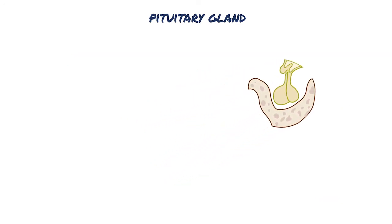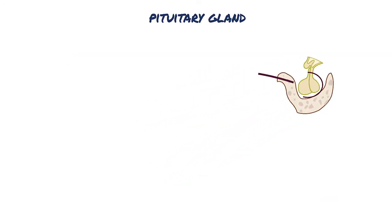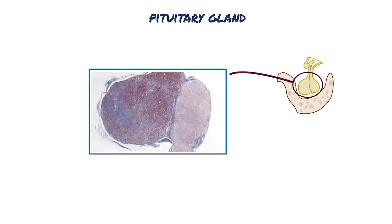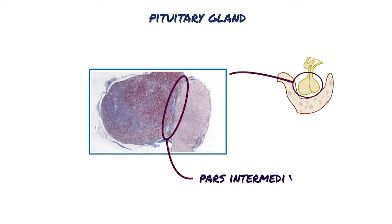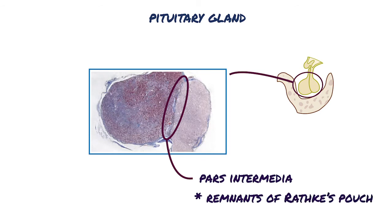In between the anterior pituitary and posterior pituitary is a thin strip of cystic tissue called the pars intermedia, which is part of the anterior pituitary because the cysts are actually remnants of Rathke's pouch, which is the embryological structure that eventually develops into the anterior pituitary.